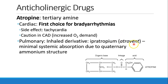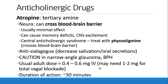Ipratropium is desired because there isn't very much systemic absorption. It has a quaternary ammonium structure, meaning it carries a positive charge and is not well absorbed across membranes. Because atropine is a tertiary amine, it will cross the blood-brain barrier. Usually this doesn't cause much effect, but patients can have anticholinergic effects in their brain — memory deficits or CNS excitement — and can ultimately develop central anticholinergic syndrome. This is treated with physostigmine, which does cross the blood-brain barrier, as discussed earlier.